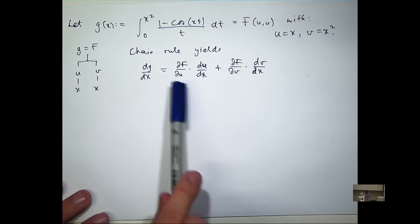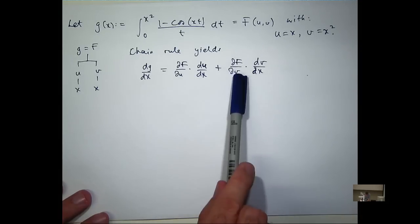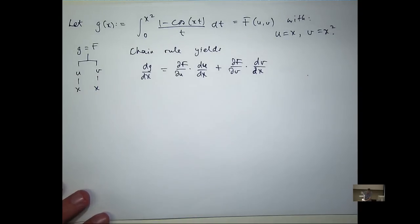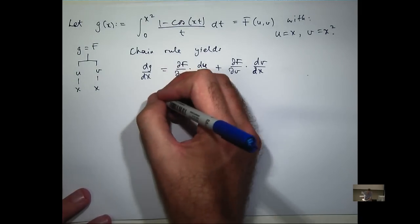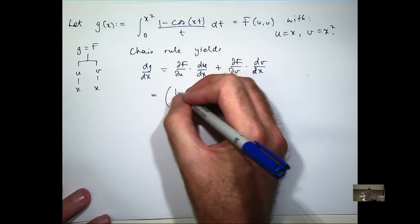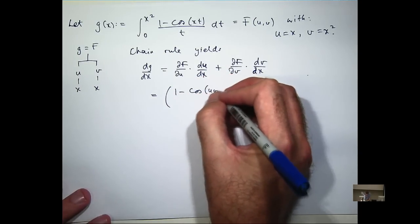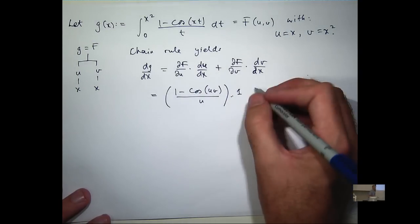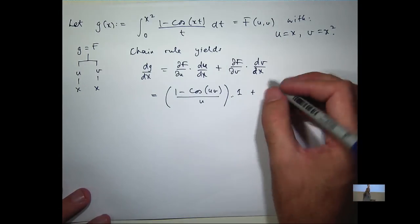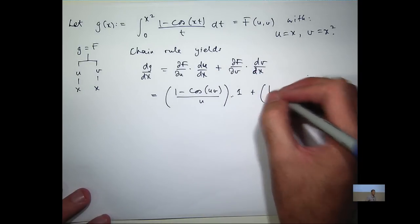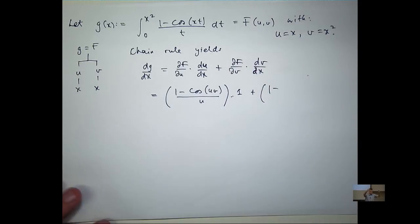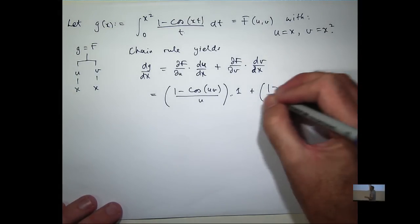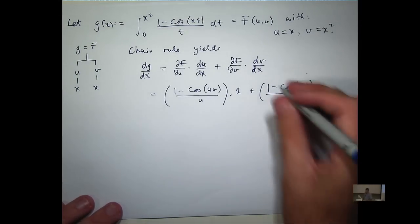Now we've already calculated these two partials on the previous page. We can easily calculate these two just from here. So du/dx will be 1, dv/dx will be 2x. So from the previous page, I have the following. du/dx is just 1. ∂F/∂v from the previous page is just the following. It's just here, all over v. dv/dx is just 2x.